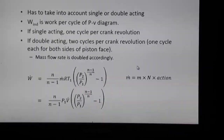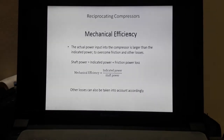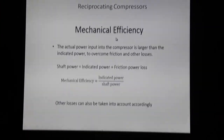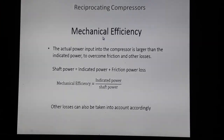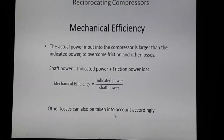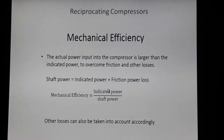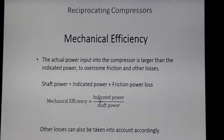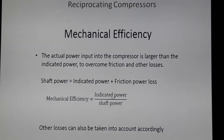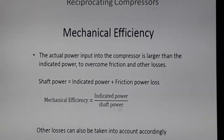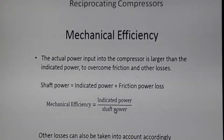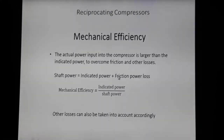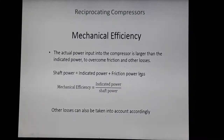Now let us discuss mechanical efficiency. Mechanical efficiency is the ratio of output to input; in a compressor it is defined as the ratio of indicated power to shaft power. The shaft power equals indicated power plus friction power losses.